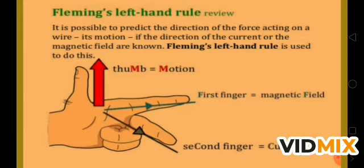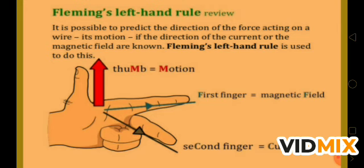It is possible to predict the direction of force acting on a wire or its motion if the direction of current and the magnetic field are known — this is what Fleming's left hand rule is used for. If you put your first finger in the direction of magnetic field and the second finger in the direction of current, then your thumb will indicate the direction of force acting on that wire due to the presence of current in the magnetic field. Remember, Fleming's left hand rule is used to find the force on the current carrying wire, while the right hand rule is used to find the direction of induced current.